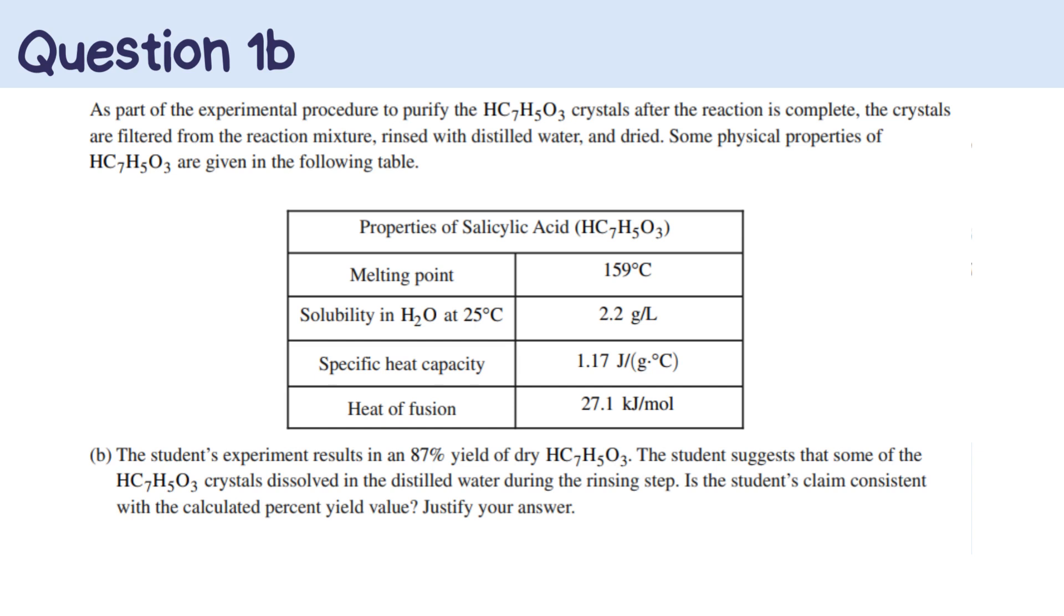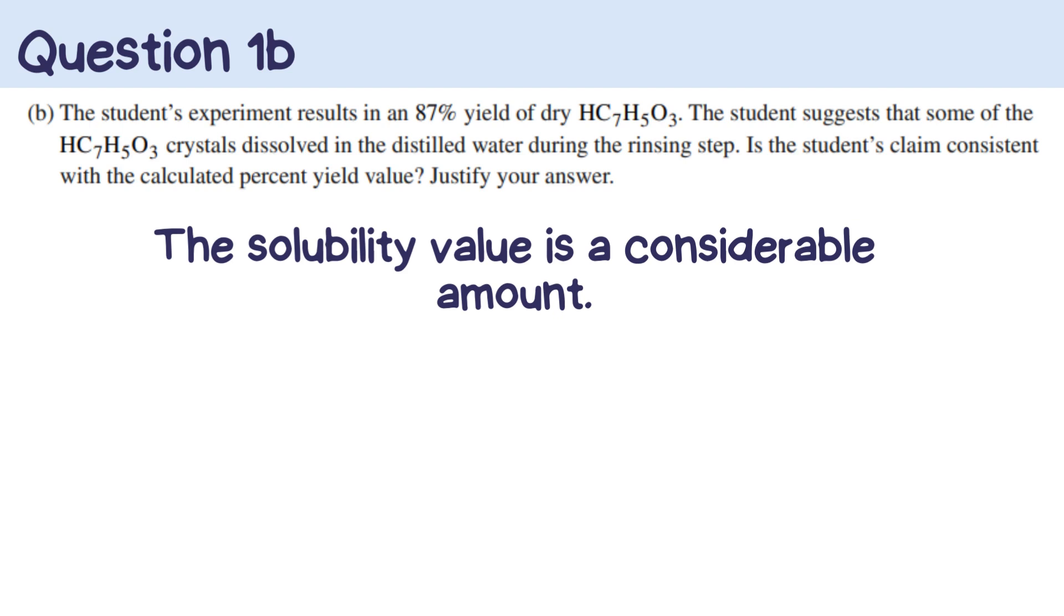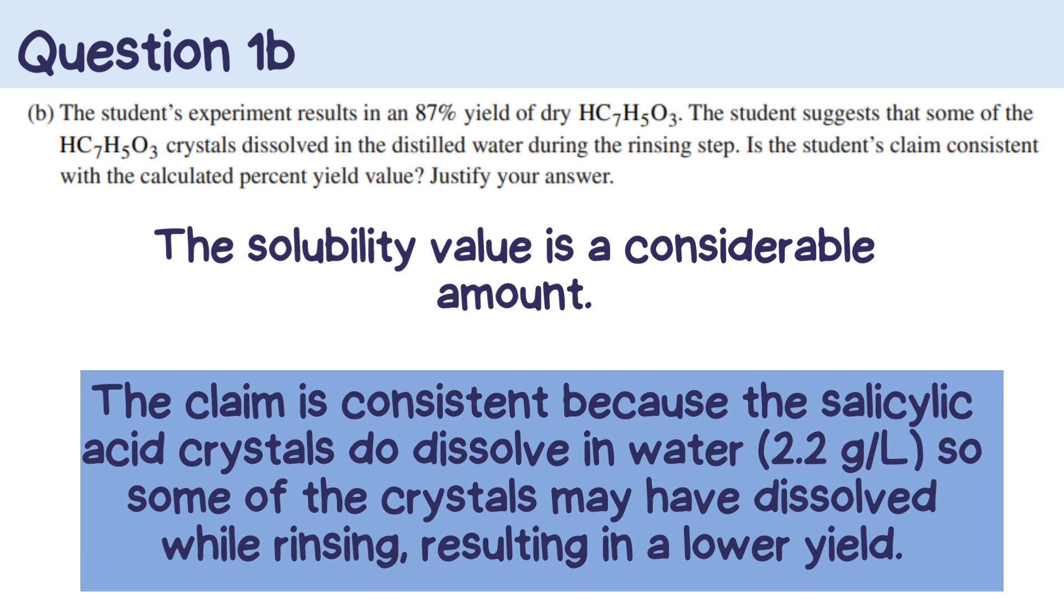Next up for 1b, we have the salicylic acid crystals. And then we're given a bunch of properties. You can kind of hint of what the next couple of problems are going to look like. This first problem is basically asking if an 87% yield is possible even after you rinse it with water. And if you look at the table, the solubility of the crystal in water is 2.2 grams per liter. It may not seem like much, but there's definitely an amount of that crystal that will dissolve. So is an 87% yield reasonable instead of a 100% yield after rinsing it with water? Well, because the table does show that the solubility value does dissolve a considerable amount, then the answer is yes. The claim is consistent because since salicylic acid does dissolve in water at least a little bit, it can dissolve when rinsing and therefore will yield a lower percent of crystals.